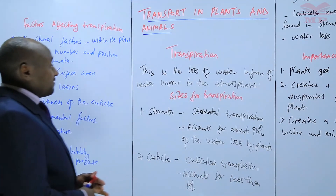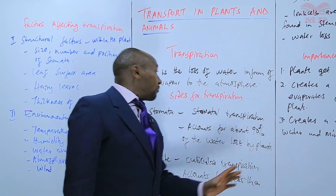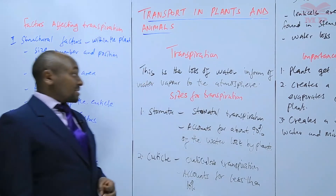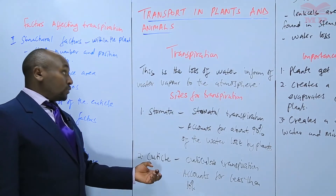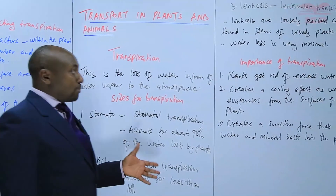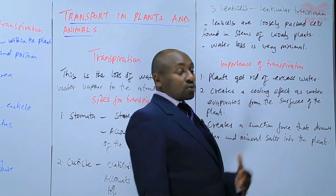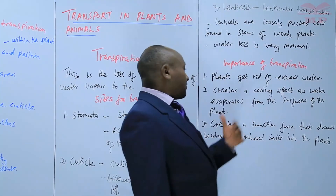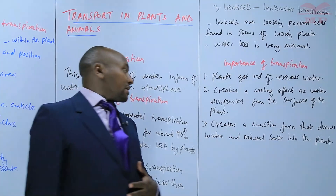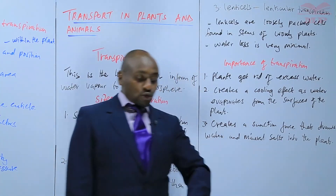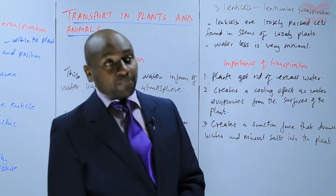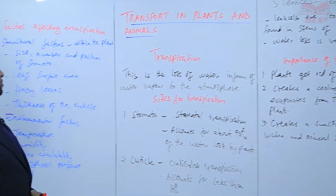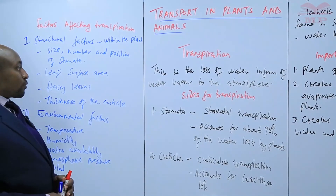So basically, we have discussed transpiration as the loss of water in the form of water vapor to the atmosphere. We have discussed the sites for transpiration — stomata, cuticle, and lenticels — the importance of transpiration, which includes getting rid of excess water, creating a cooling effect, and creating a suction force that draws water and mineral salts from the soil. Finally, we looked at the structural and environmental factors that affect transpiration.